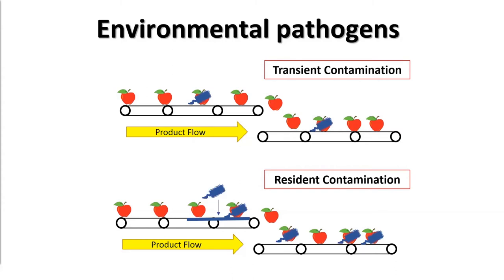We have this group of bacterial pathogens we call environmental pathogens that can actually build up and become residents in the post-harvest environment. Listeria monocytogenes, that I mentioned earlier, is an environmental pathogen that really thrives in moist environments and is of particular concern in packing sheds and packing houses.